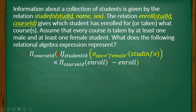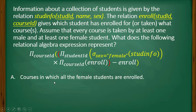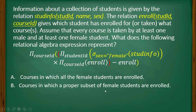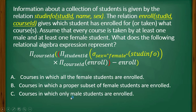The expression is: projection of course ID of — projection of student ID, selection where sex equals female from student_info — Cartesian product with projection of course ID from enroll — minus enroll. The options are: (A) courses in which all female students are enrolled, (B) courses in which a proper subset of female students are enrolled, (C) courses in which only male students are enrolled, (D) none of the above.